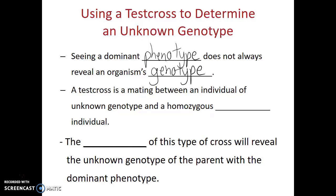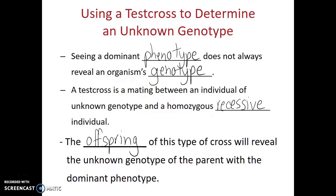A test cross is a mating between an individual of unknown genotype and a homozygous recessive individual. With the test cross, you look at the offspring of this type of cross in order to determine what the genotype of the parent with an unknown phenotype is.